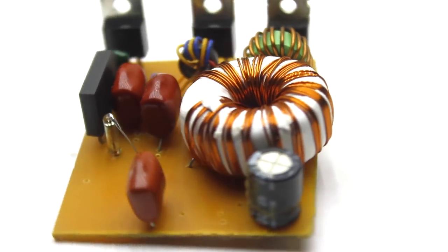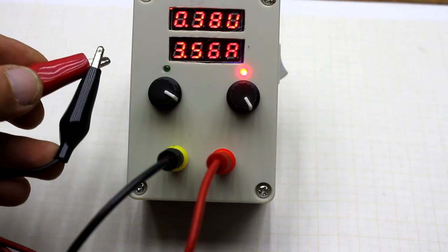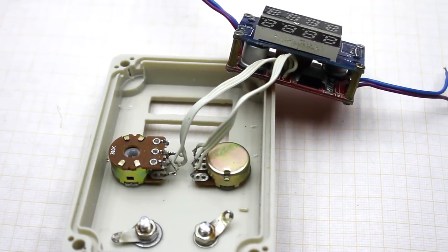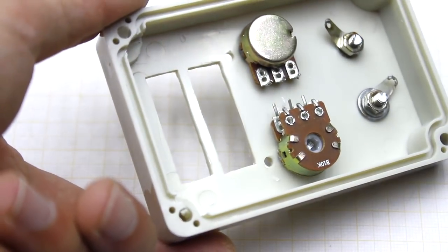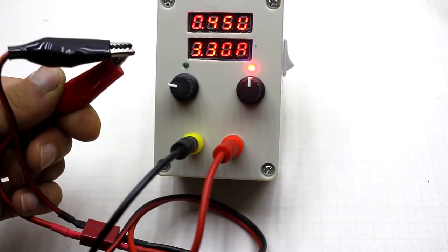By the way, the power supply has no protection, but the stabilizer itself limits the current at the level of 5A. I added an additional resistor, which is connected in series with a variable resistor in charge of limiting the current, and reduced the maximum current to 3A, so that even with a short circuit, nothing happens.